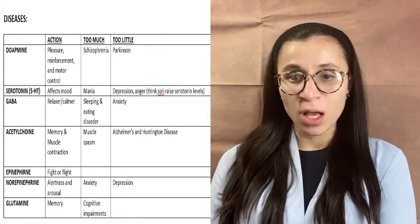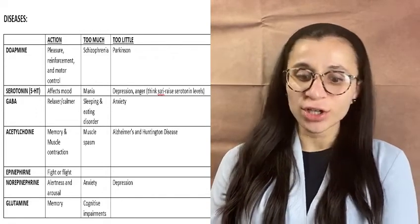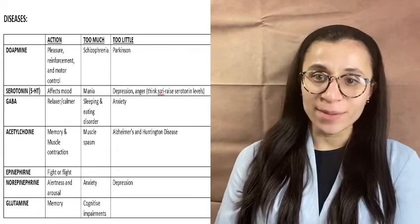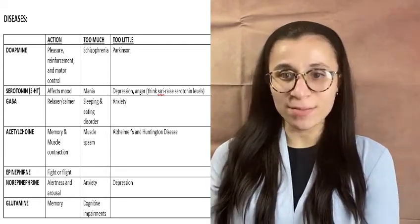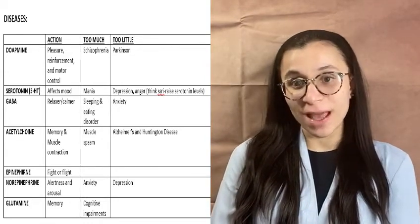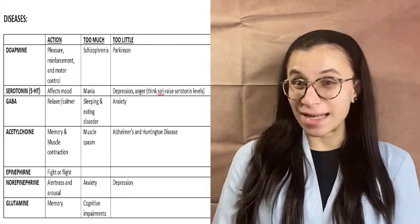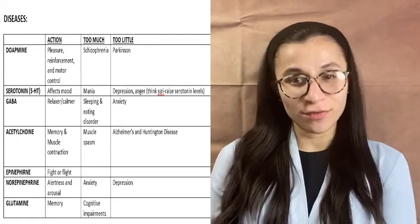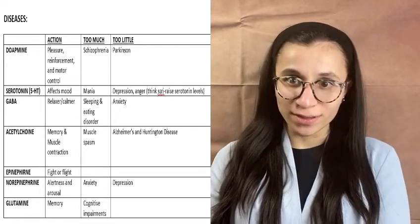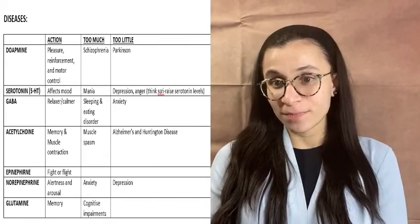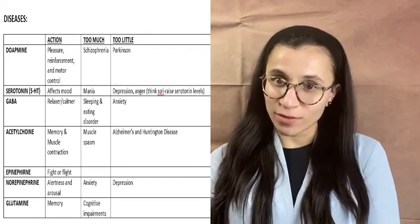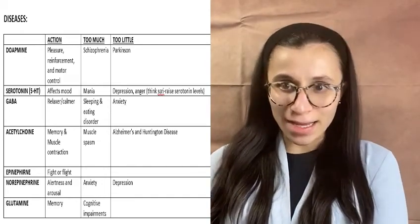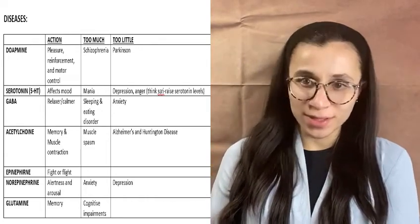Number one is dopamine. Dopamine is in charge of pleasure, reinforcement, and some motor control. How I like to remember it is 'dope' — when something makes you happy, you're going to do it again. If you like to eat chocolate, it gives you a pleasure feeling, so you'll eat it again and kind of get addicted. Dopamine is a pleasure reward center — you get it when you do certain things and you want to repeat them. If you have too much dopamine, it could cause schizophrenia. If you have too little, it could cause Parkinson's, since it also relates to motor function.